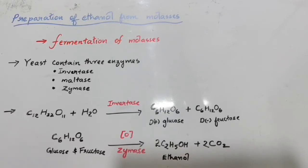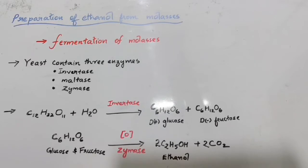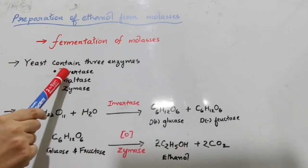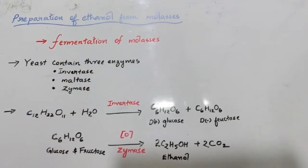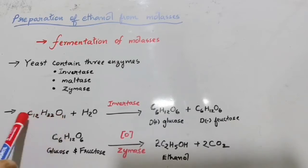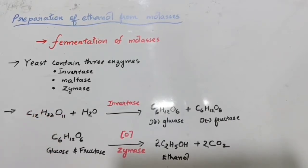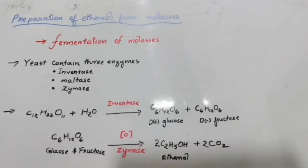The method used here is fermentation of molasses. First, molasses is taken from the sugar industries and a large amount of water is added to make the solution dilute, which is suitable for the germination of yeast. Yeast contains three enzymes: invertase, maltase, and zymase. The action of these enzymes converts the cane sugar in molasses into ethanol.